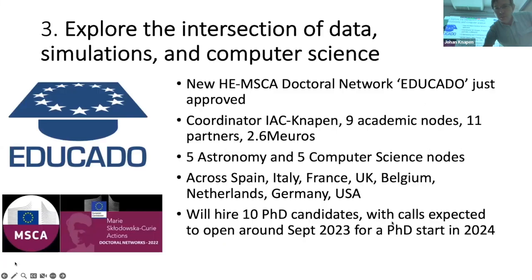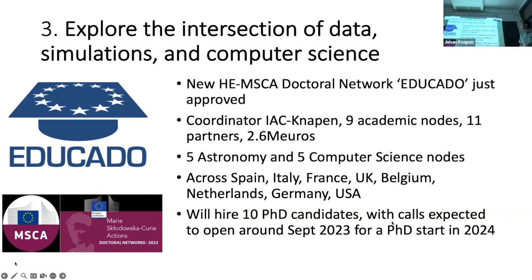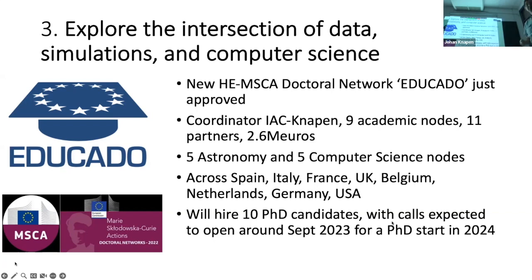My third example is modeling informing machine learning. This is what we're going to do in a new Horizon Europe doctoral network called EduBiCaDo, which has just been approved two weeks ago. It is coordinated from the IAC by myself. We have nine academic nodes, eleven partners, a 2.6 million euro budget, five astronomy and five computer science nodes — with Groningen doing both. This spans most of Europe and the USA. We will hire 10 PhD candidates across the network. Calls are expected to open around September this year for a PhD start in 2024, so if any of you are students or know students who are interested, keep an eye out.